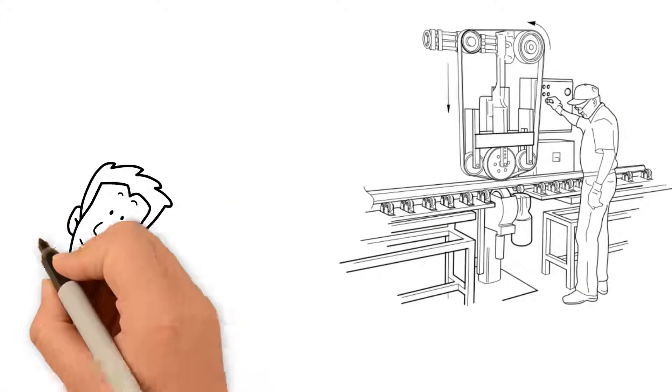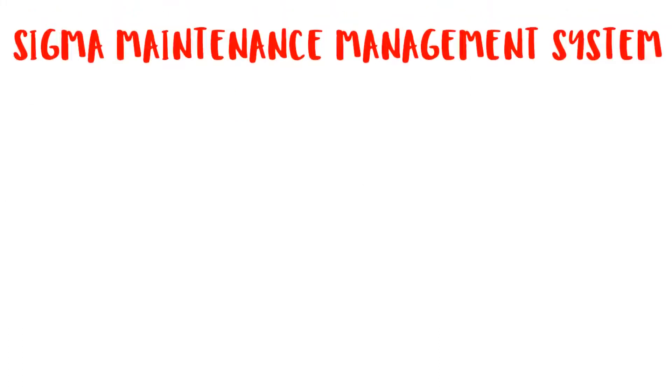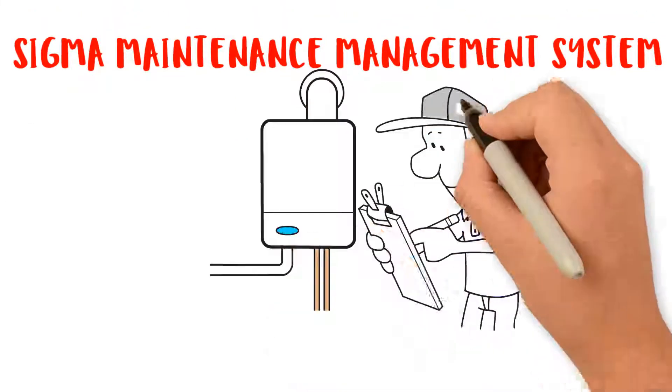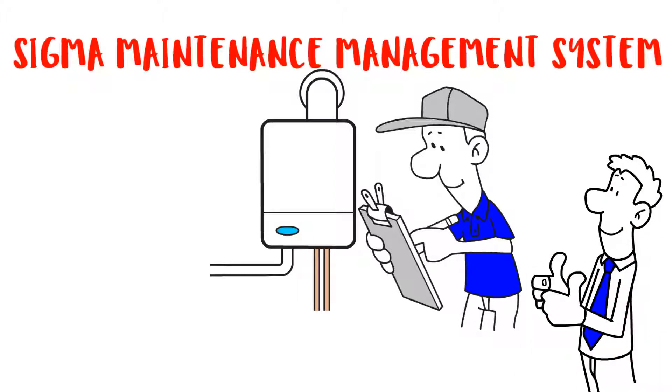If you look after machinery in your business, then you need Sigma Maintenance Management System. Sigma is a maintenance management system designed for ease of use, flexibility, and to be ready to go straight out of the box.